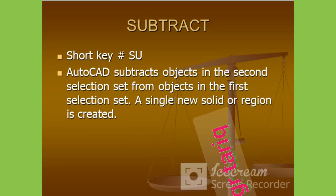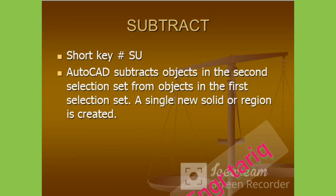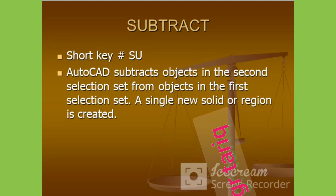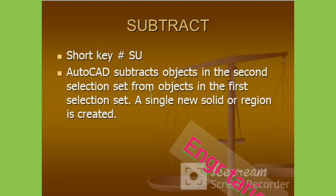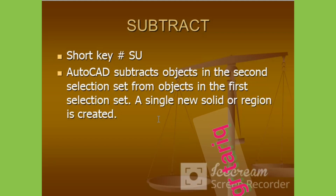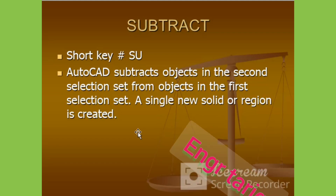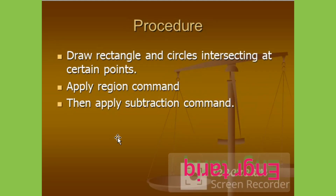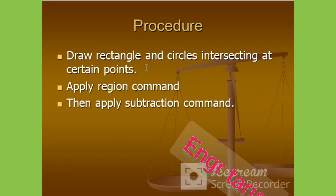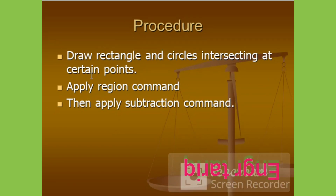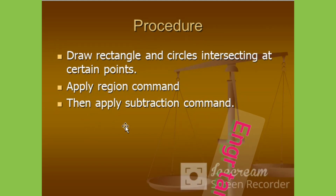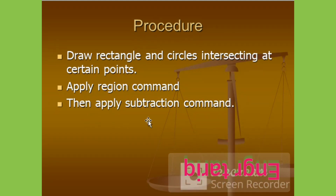Next, Subtract. The shortcut is SU. AutoCAD subtracts objects in the second selection set from the object in the first selection set, and a single new solid or region is created. The procedure: draw a rectangle and circle intersecting at certain points, apply the region command, then apply the subtract command.